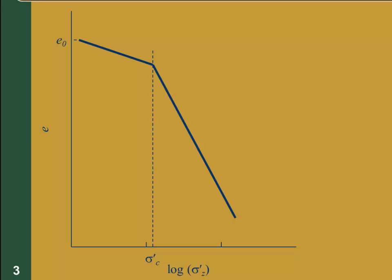The compression curve in this plot starts at the initial void ratio E0, and follows the recompression and virgin curves to the final void ratio E sub f. The void ratio decreases from E0 to E sub f. For computation purposes, we have placed two points on the virgin curve, A and B, and two points on the recompression curve, C and D. The slope of the compression curve is a measure of compressibility — the steeper the curve, the greater the compressibility. That's why the virgin curve is steeper than the recompression curve.